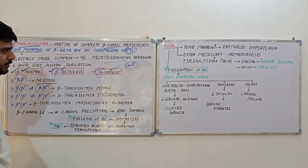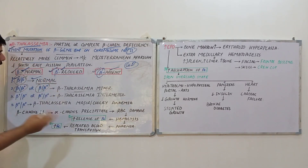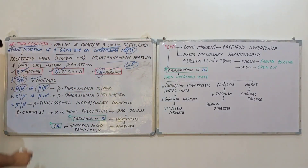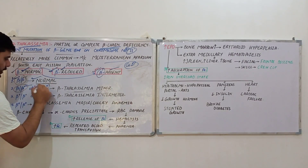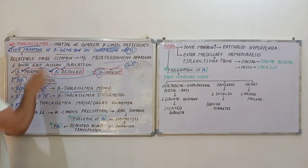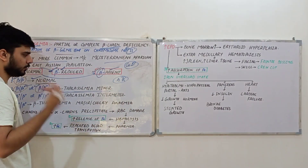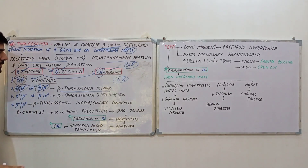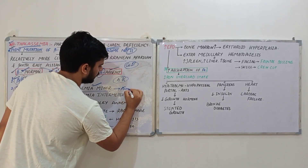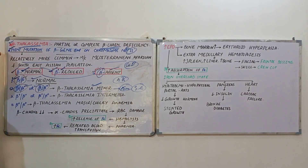We have two copies of the beta gene, one from each parent, each potentially having any of the three forms. When one copy is normal β combined with β⁺ or β⁰, this leads to beta thalassemia minor. Since thalassemia is autosomal recessive, two defective copies are required to show symptoms. With one normal copy, no symptoms appear — it is an asymptomatic, silent carrier state.